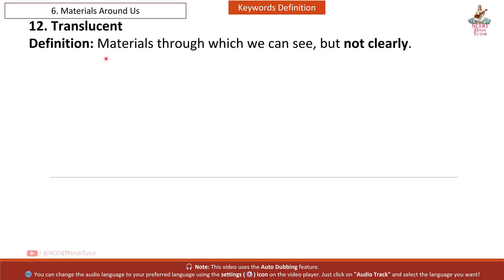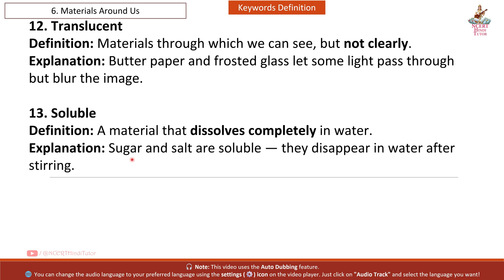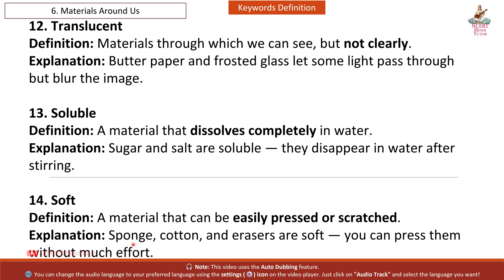Twelfth: Translucent. Definition: materials through which we can see but not clearly. Explanation: butter paper and frosted glass let some light pass through but blur the image. Thirteen: Soluble. Definition: a material that dissolves completely in water. Explanation: sugar and salt are soluble, they disappear in water after stirring. Fourteenth: Soft. Definition: a material that can be easily pressed or scratched. Explanation: sponge, cotton and erasers are soft, you can press them without much effort.